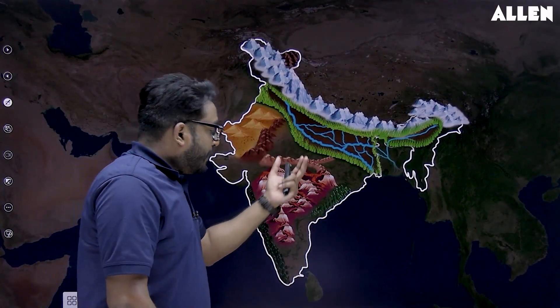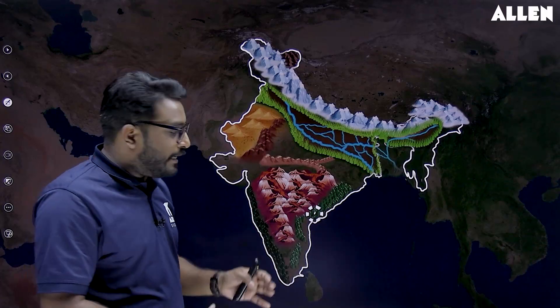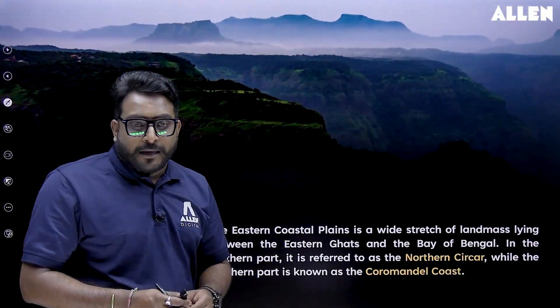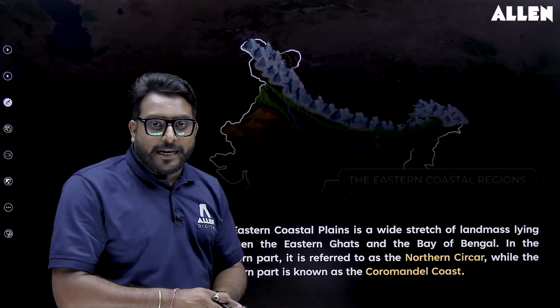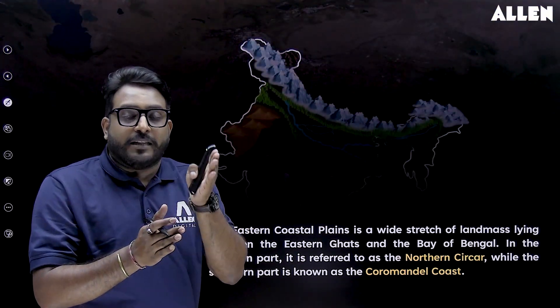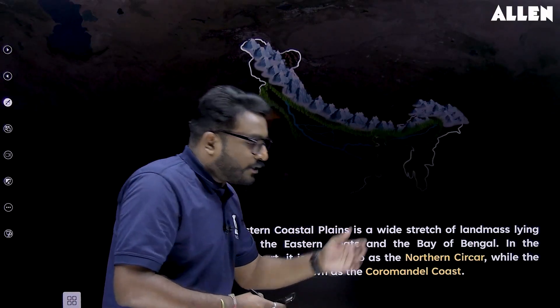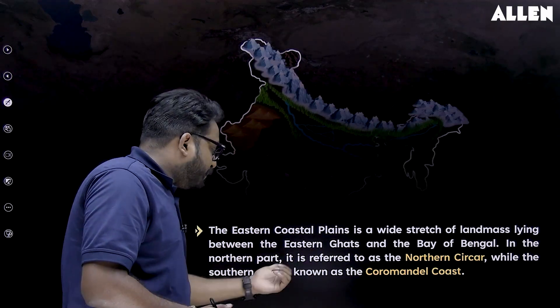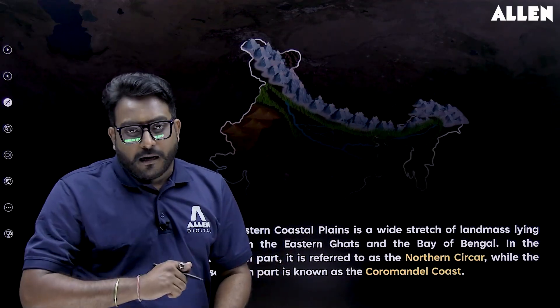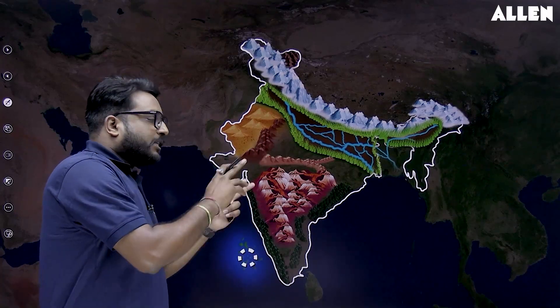The Eastern Coastal Plains are quite broad compared to the Western Coastal Plains and are also dissected, because east-flowing rivers like Krishna, Kaveri, Godavari, and Mahanadi create extensive deltas here. These plains are sandwiched between the Eastern Ghats and the Bay of Bengal, and are divided into two parts: the northern part known as the Northern Circars and the southern part known as the Coromandel Coast.